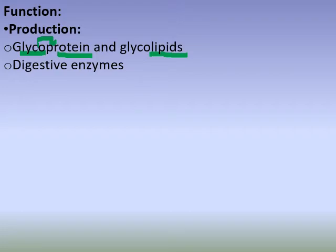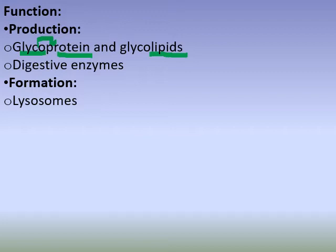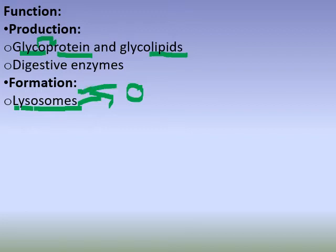The digestive enzymes may be processed and packaged in the Golgi Complex. This leads to the formation of lysosomes. Lysosomes are a substance that is involved in digesting material. The substance being digested can be cell organelles — this is called cell organization or autophagy.